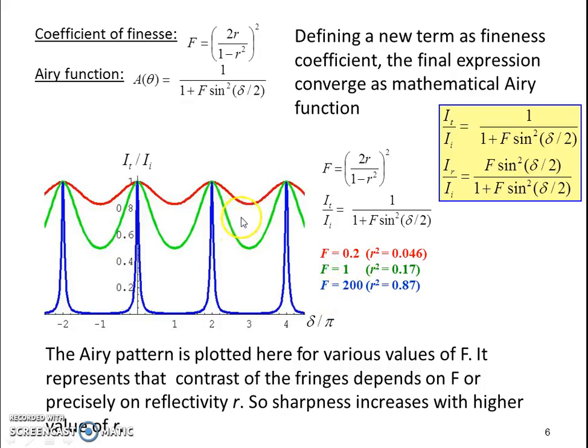We can see the difference. All these cases have the maxima and minima distribution and there is a change of sharpness or contrast. We can conclude that the sharpness depends on this value of F which is the value of R square or the reflectivity. The sharpness increases with higher value of R.